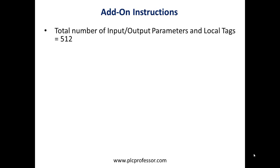The total number of input and output parameters and local tags for an add-on instruction is 512. That may not sound like a lot, but when you think about how to use and create add-on instructions, if you're approaching 512, you've really gone beyond what an add-on instruction was meant for. Add-on instructions should be kept very simple. If you're going to have that many input/output parameters and local tags, you probably should be nesting your add-on instructions.